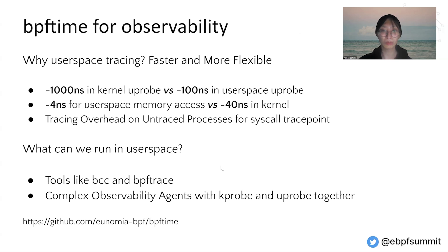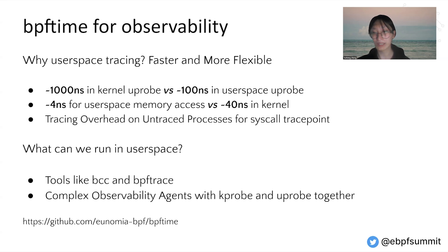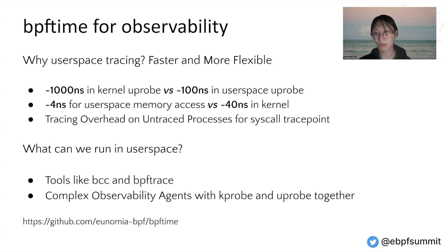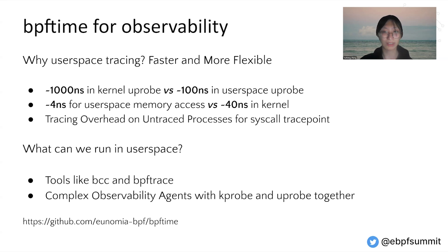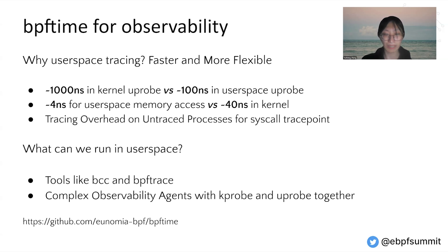So why do we want observability with eBPF in user-space? It's simple — user-space tracing can be faster and more flexible. For example, uprobes in kernel take about 1000 nanoseconds, but in user-space we've rolled that down to about 100 nanoseconds. Similarly, memory access in user-space is about 4 nanoseconds and about 40 nanoseconds in kernel. This speed difference happens because the kernel often has to translate memory addresses or run additional checks to access user-space memory.